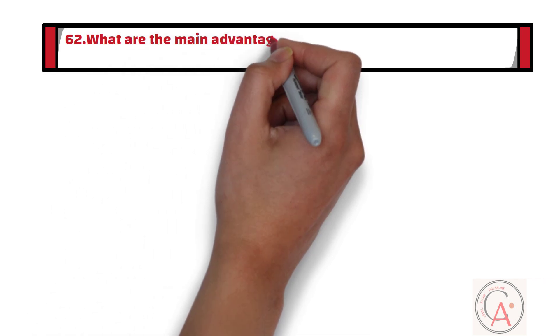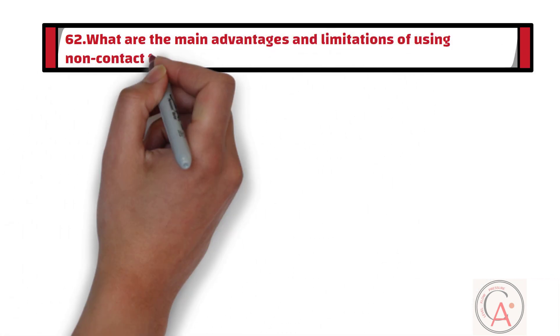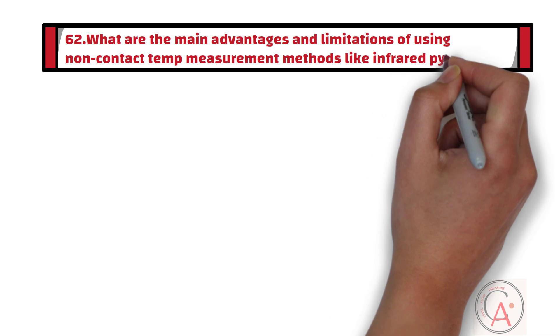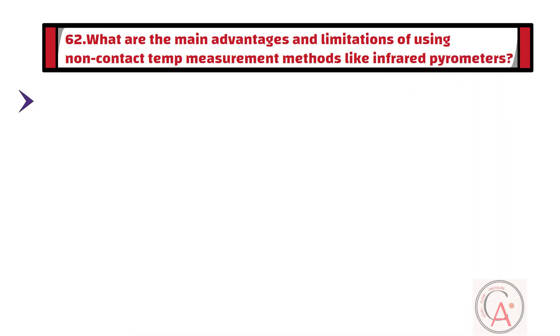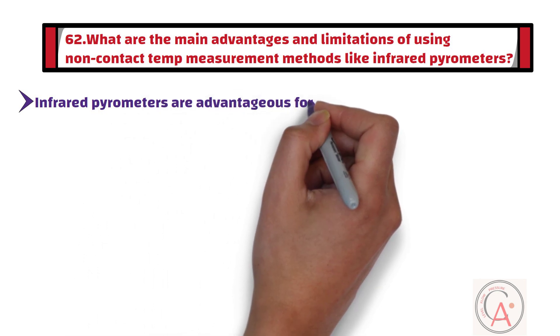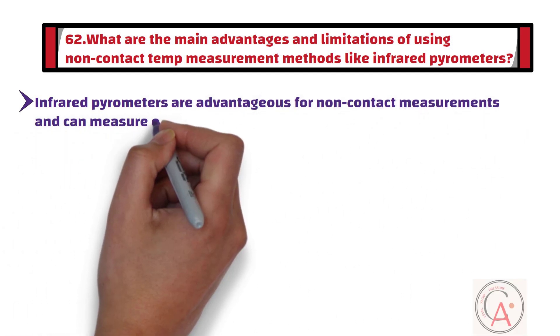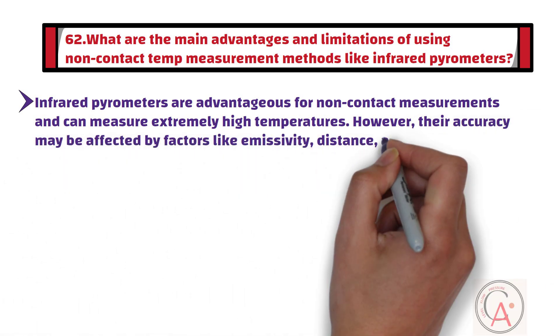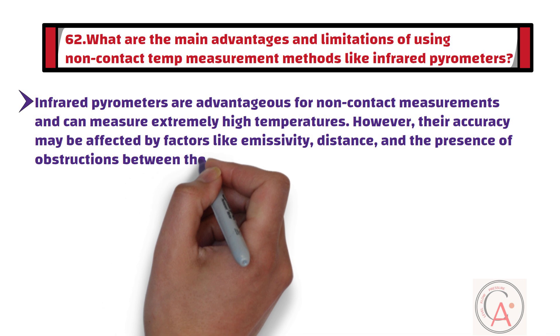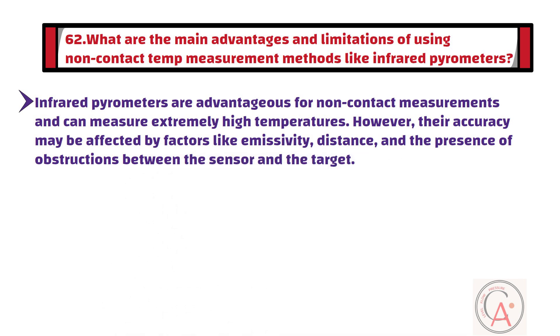Question number 62: What are the main advantages and limitations of using non-contact temperature measurement methods like infrared pyrometers? Infrared pyrometers are advantageous for non-contact measurements and can measure extremely high temperatures. However, their accuracy may be affected by factors like emissivity, distance, and the presence of obstructions between the sensor and the target.